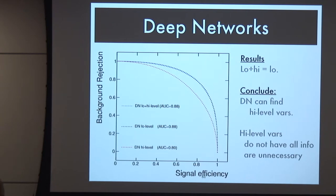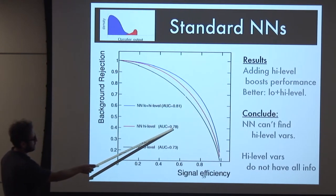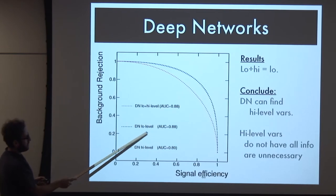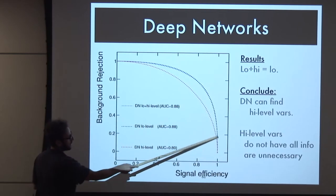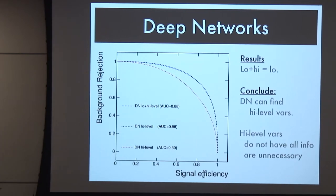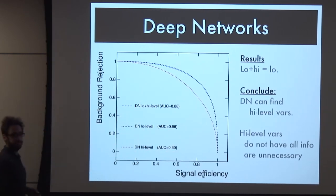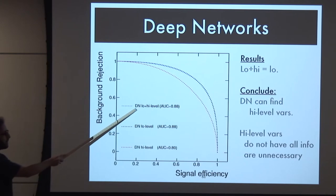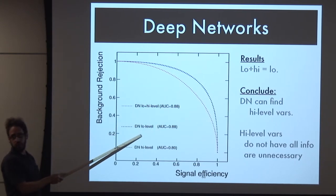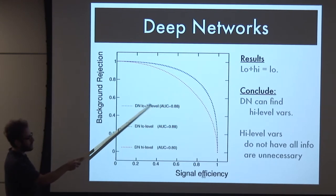The deep network with just the low-level information achieved a performance of 0.88, compared to our previous best of 0.78 - pretty impressive. When you give the deep network only the high-level information, it does worse - because there's less information in the high-level. When you give the deep network both low and high level, it doesn't improve over just the low-level information. Why? Because it says: I already knew everything you just told me. It figured out the physics clues, maximized it, squeezed all the information out, and recognized that the high-level information was redundant.